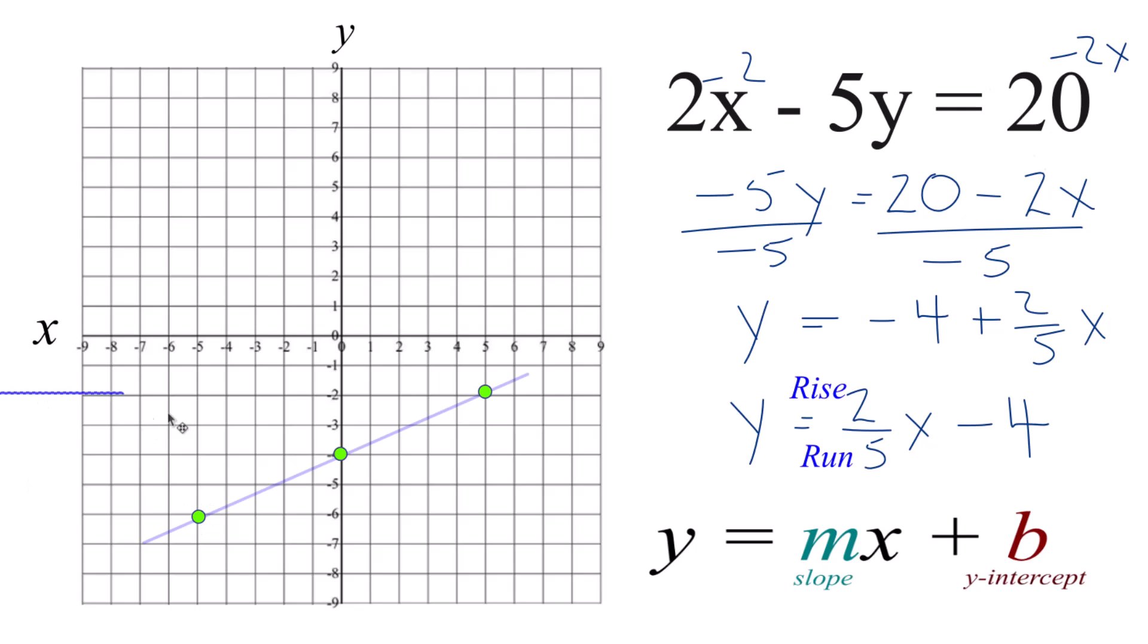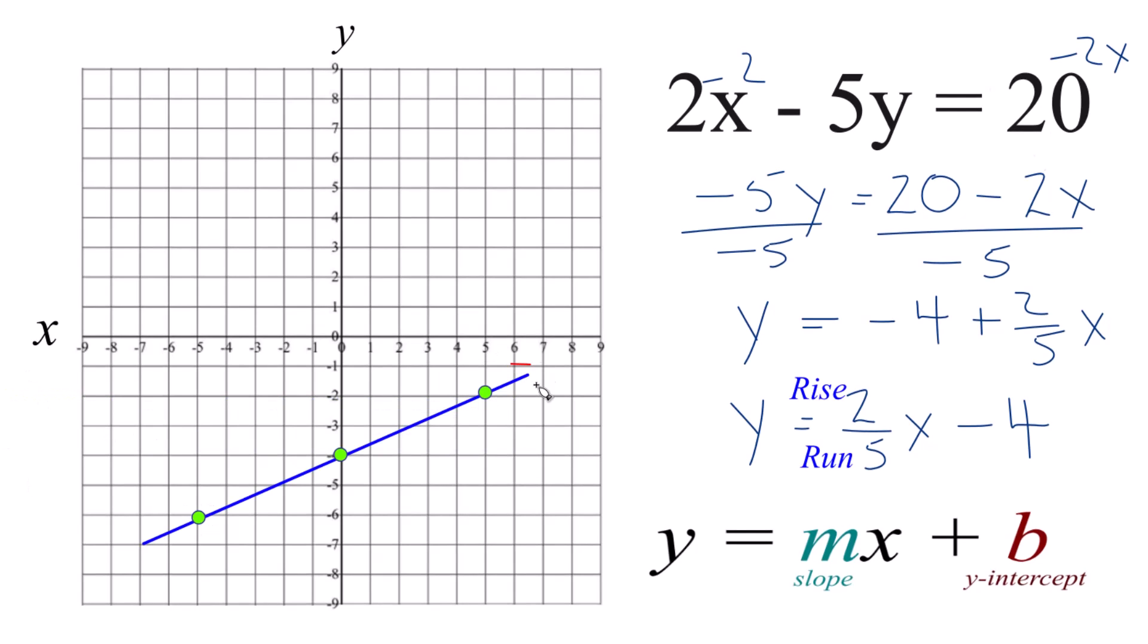There's our line. Let's put a line through that. Then we can put arrows to show that this goes to infinity, and that's the line. This is the graph for 2x minus 5y equals 20.